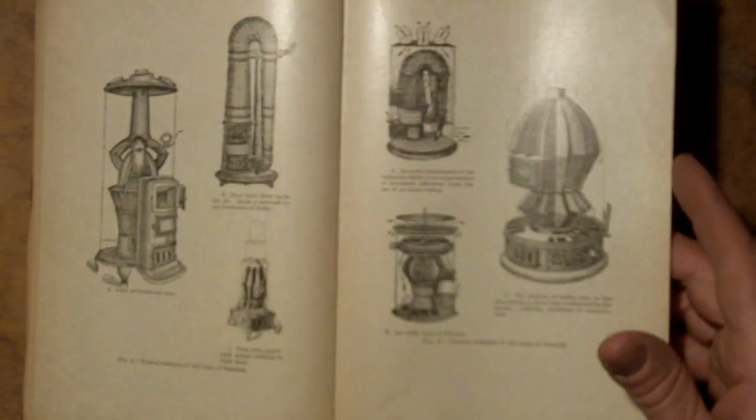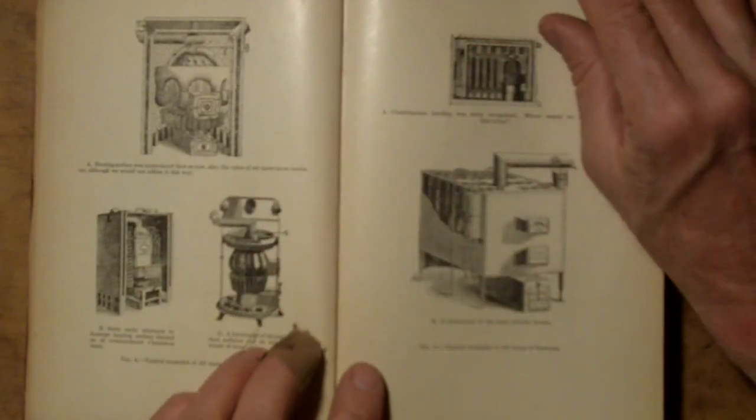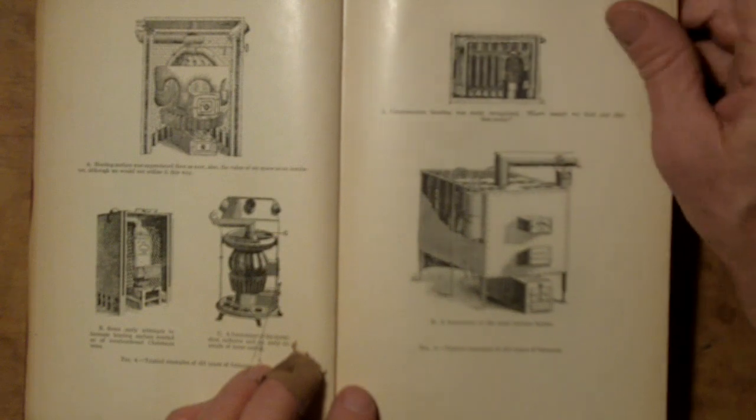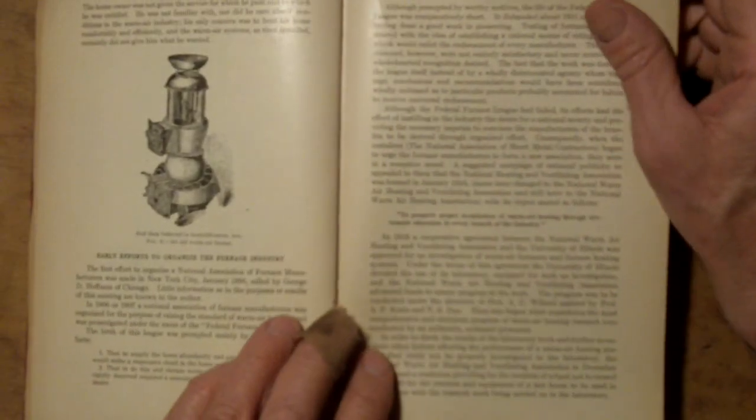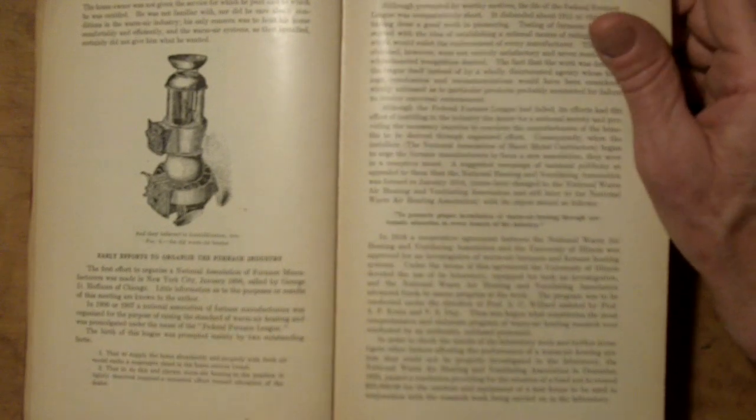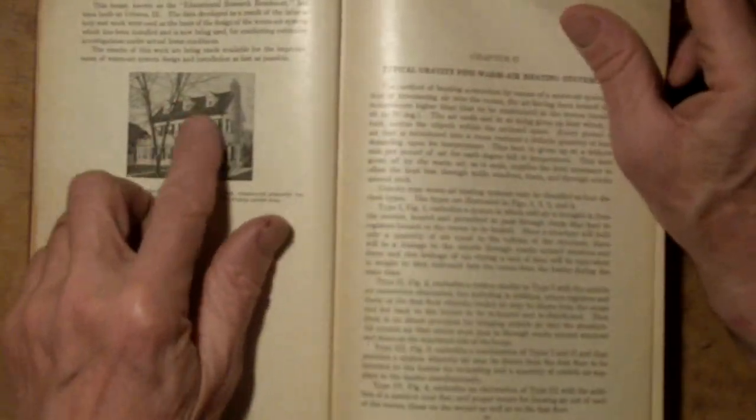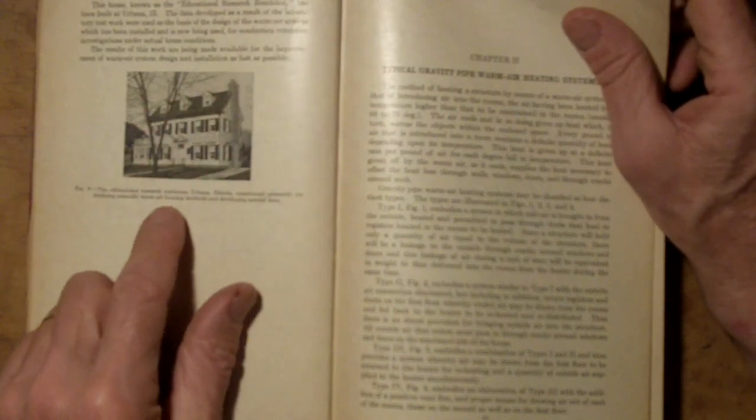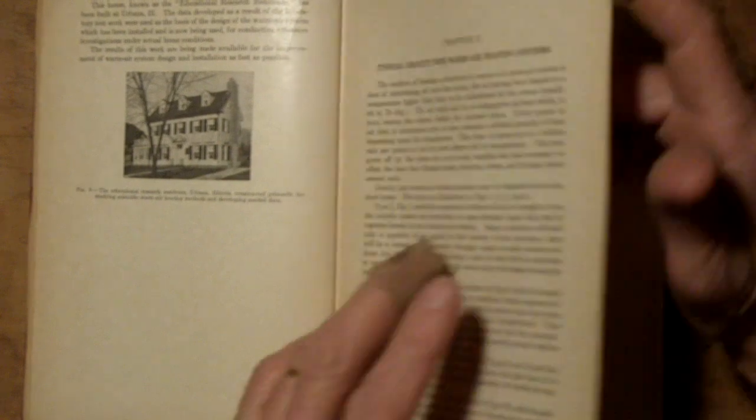These are examples of earlier, I think in a way this could be regarded as the golden age of iron casting, or cast iron making. The point was to heat a house as big as that. Gravity, pipe, warm air, heating systems.